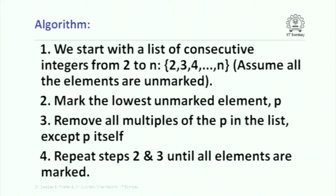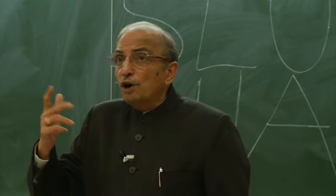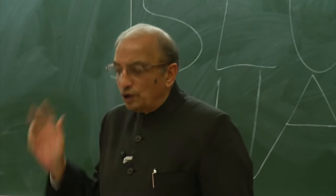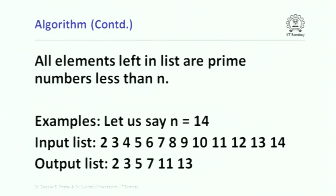Keep doing this: first for 2, then 3, then 5 (since 4 would have been marked), then 7, and so on. Here is the algorithm structure given for you to program. All elements left in the list are prime numbers less than n. For example, if n equals 14, you start with the list 2, 3, 4, 5, 6, 7, 8 through 14. When you complete execution of the C++ program, the output list should be 2, 3, 5, 7, 11, 13. These are the elements which will be output — those unmarked at the end of the algorithm.